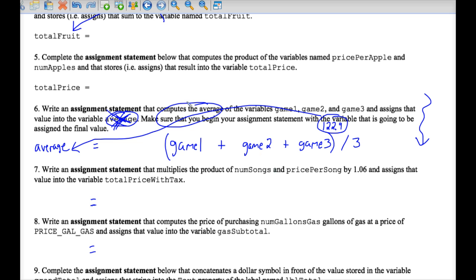Okay, number seven. Notice that I use the word product. That means multiplication. You'll be multiplying something by 1.06 as part of your answer. Back here in number five, the word product shows up again. You'll need to use a star for multiplication.